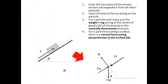For an object on an inclined surface, we have the normal force perpendicular to the surface, the applied force, and the friction force. The weight acts vertically downward, the normal force is perpendicular outward from the surface, and the friction force is opposite to the direction of the applied force.